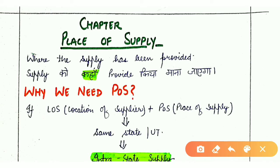Hello everyone, welcome to my YouTube channel Commercified. Let's see the Place of Supply topic under GST. Place of Supply is very important because time, place, and value of supply are one of the most important chapters under GST. Without these chapters, the foundation of GST is not strong, so Place of Supply is very important.